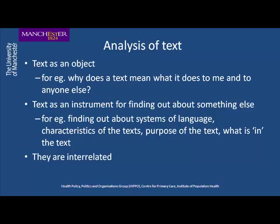When you analyse text, which approaches you use depends on what is the focus of your research. Are you looking at text as an object — for example, finding out about why text means what it does? Or are you looking at text as an instrument for finding out about something else, such as the systems of language, the characteristics, purpose of the text? These two things are actually interrelated — you cannot explain why a text means what it does without understanding the whole system of language, and vice versa.